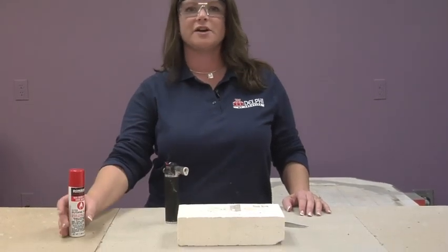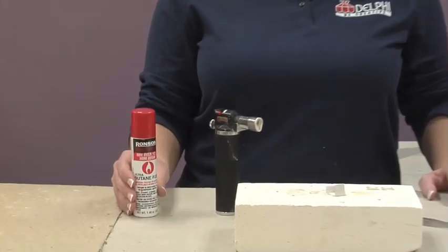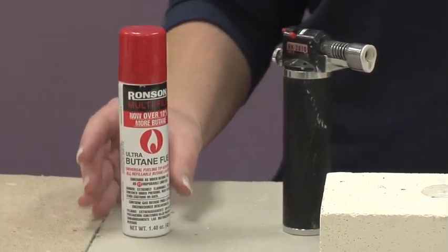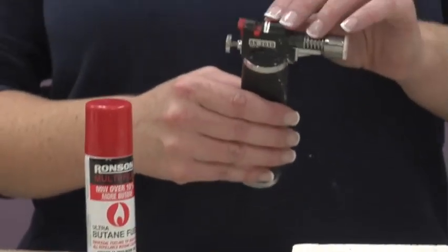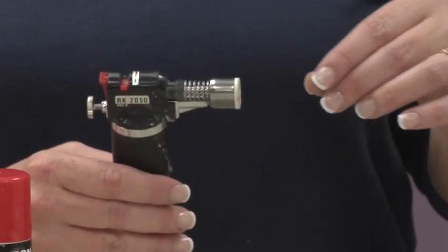First thing you'll want to do with your torch is we need to go ahead and fill it, and this little handheld torch here uses butane as the fuel source. So when you get your torch, you just want to make sure that it is over on the minus side so that when we fill it, the fuel doesn't come right out.